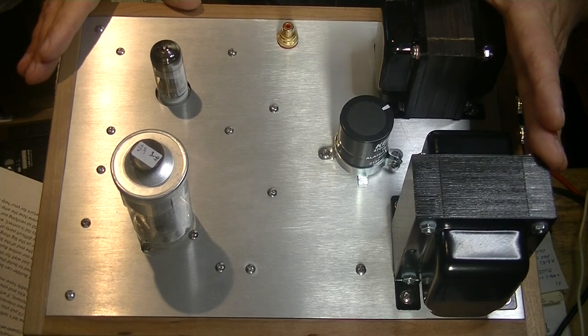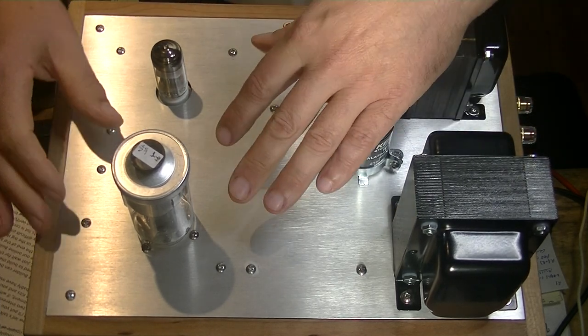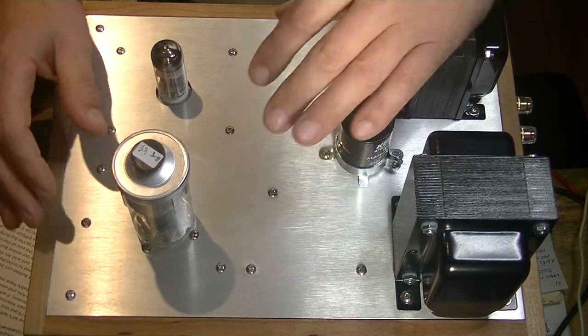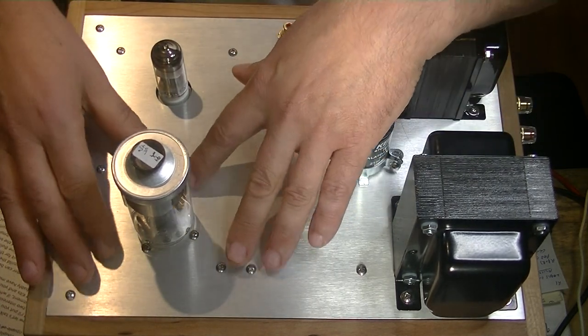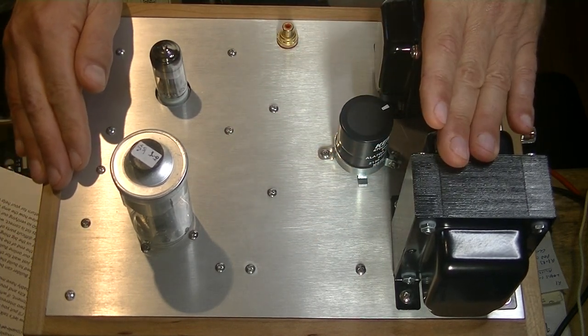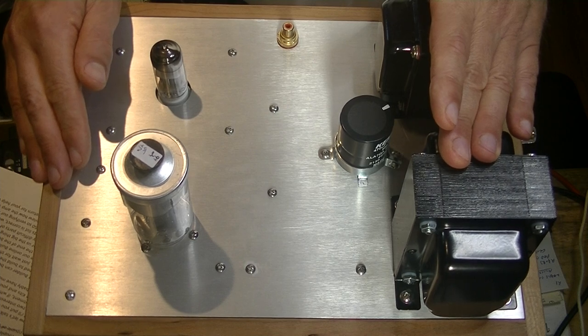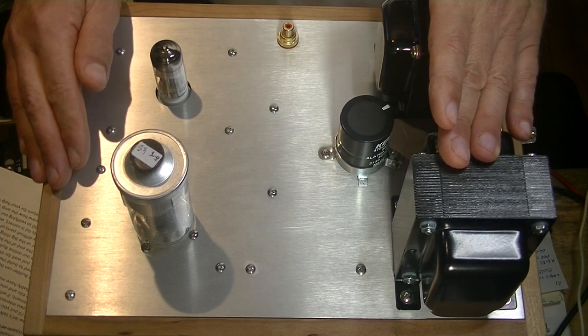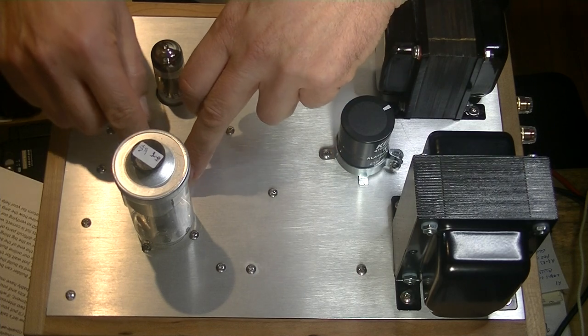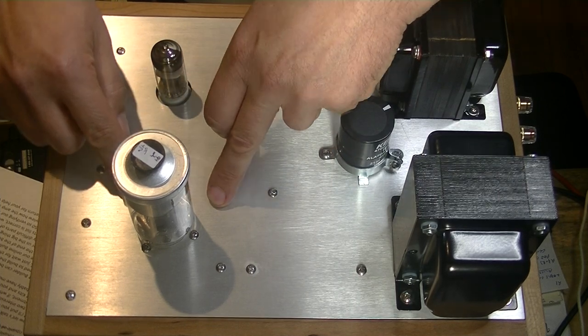So, the first thing I noticed is that the top plate around the power tube was getting fairly warm. And after hours of operation, it was getting fairly hot. It wasn't getting so hot that it was really a big problem. But I know that for the production version, we're going to put a series of ventilation holes around the GU50.